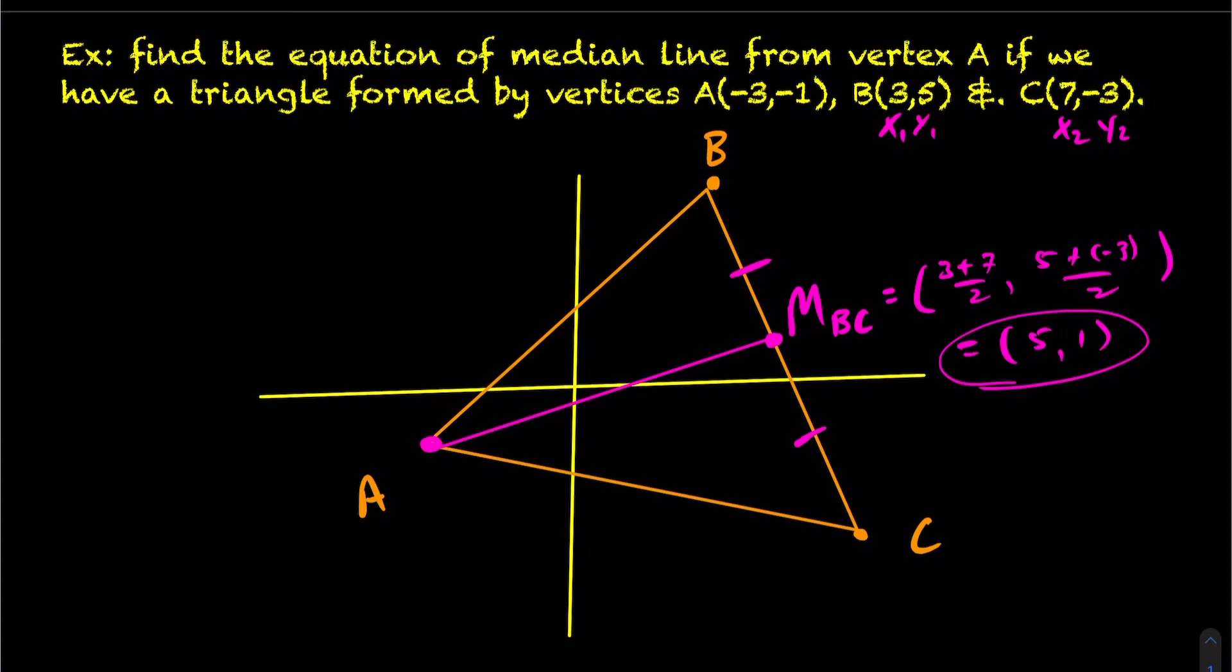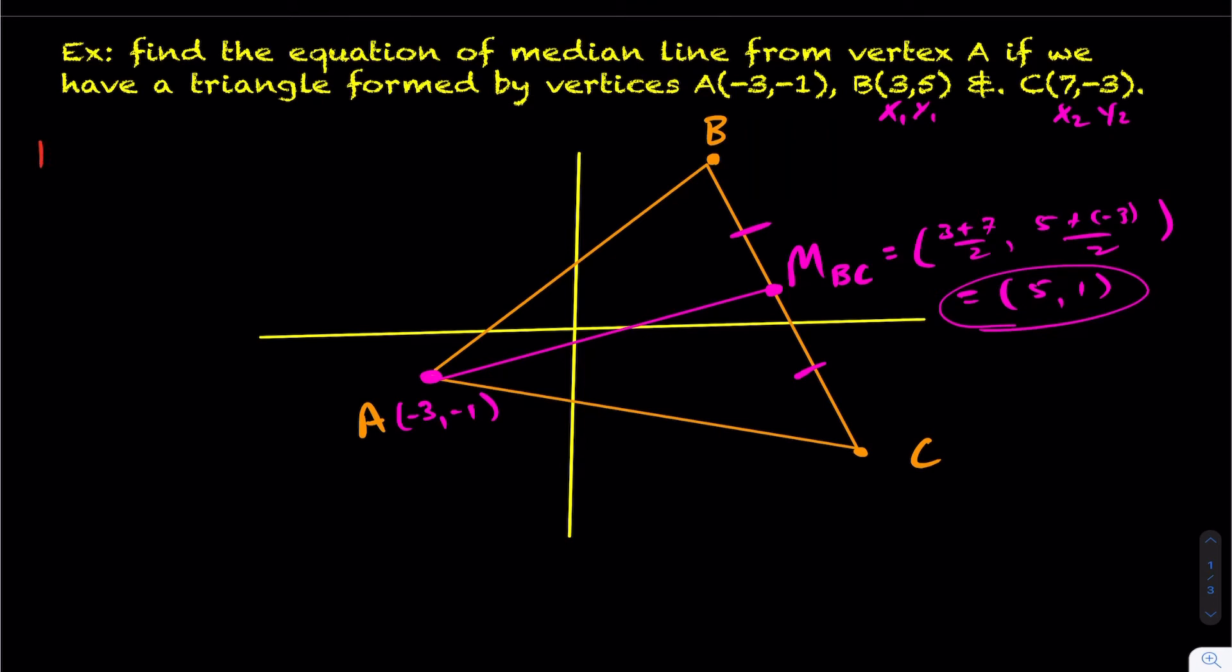I now, I also know what point A is. Point A is the point (-3, -1). So what I have here is I want to find the equation of this line. I have this point, which is (5, 1). I have this point, which is (-3, -1). So you're essentially just finding the equation of line given 2 points at this point.